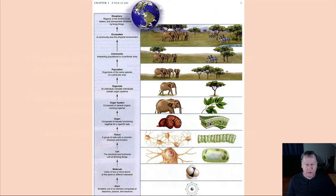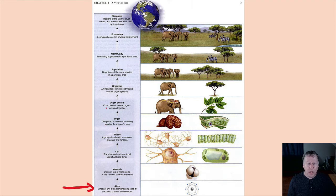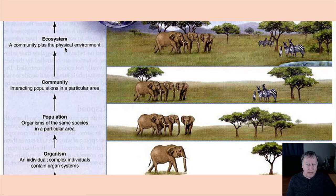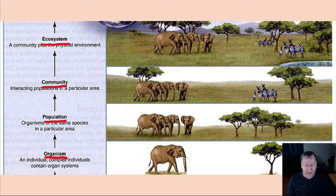Biology is made up of a series of levels of organization, starting at the atom. Each level builds on the previous one: atom to molecules, molecules to cells, cells to tissues, tissues to organs, organs to organ systems, and organ systems form organisms. Living things can be grouped into even higher levels — populations, communities, ecosystems, and ultimately the biosphere, which is all life on Earth. Ecology focuses on these higher levels, starting with the organism and spending most of its time on population, community, and ecosystems.